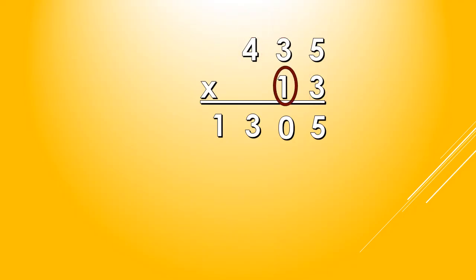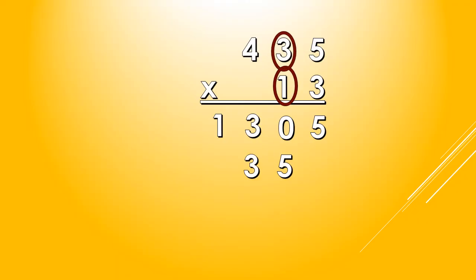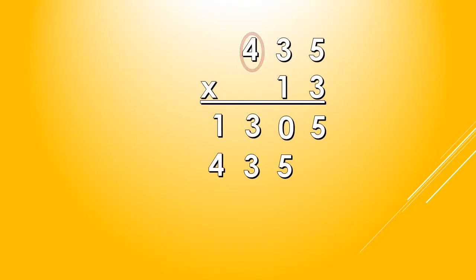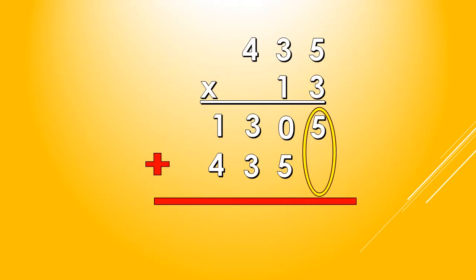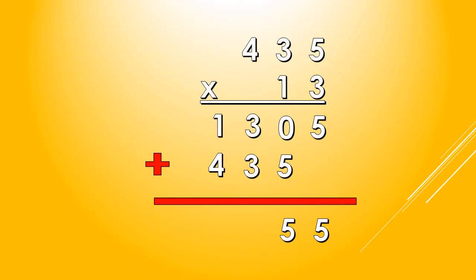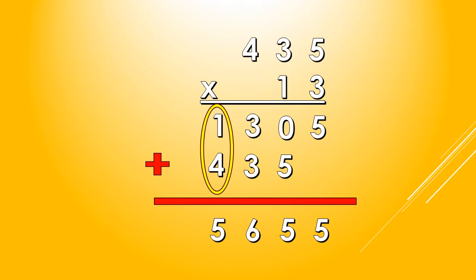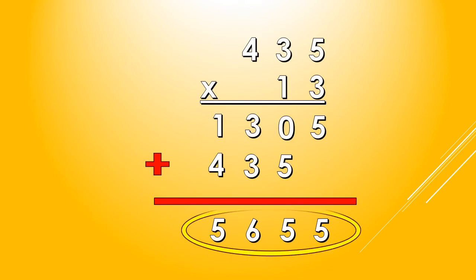Now, we multiply the 10's place value to the Multiplicand. 1 times 5, we get 5. 1 times 3, we get 3. 1 times 4, we get 4. And then, we add the partial products. We bring down 5 because we are adding 5 to nothing. Then, 0 plus 5, we get 5. 3 plus 3, we have 6. And, 1 plus 4, we get 5. So, our answer is 5,655.